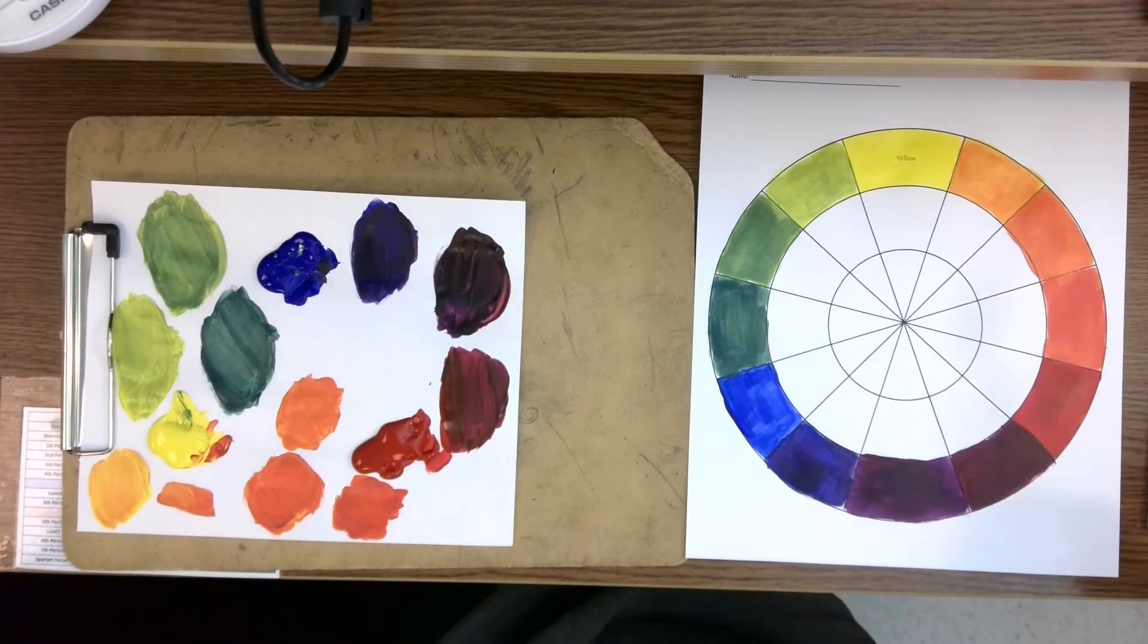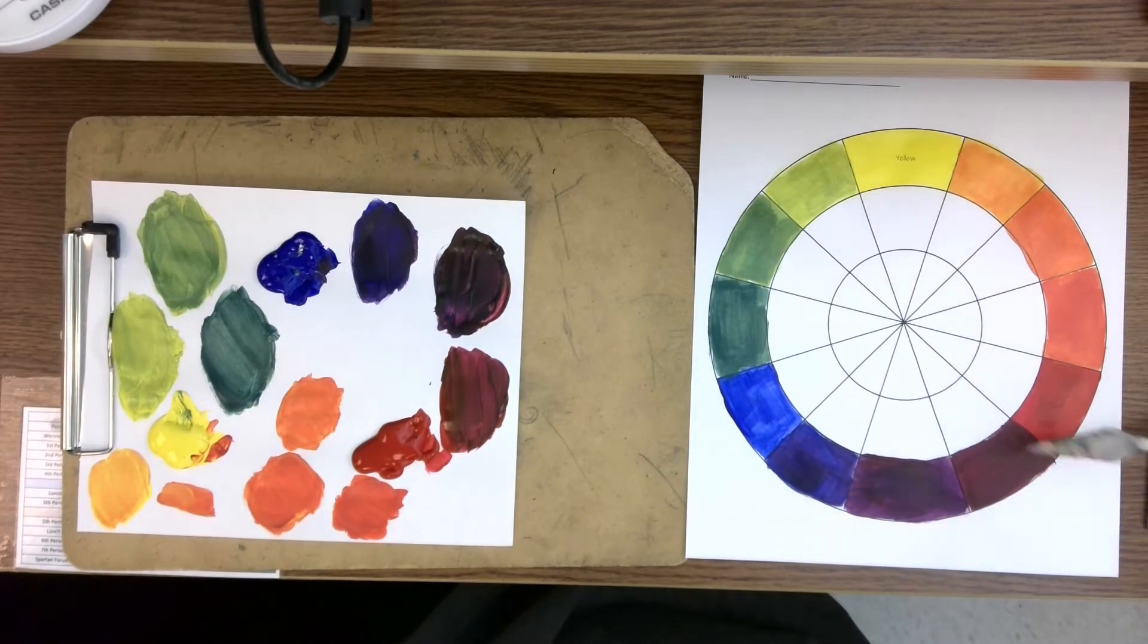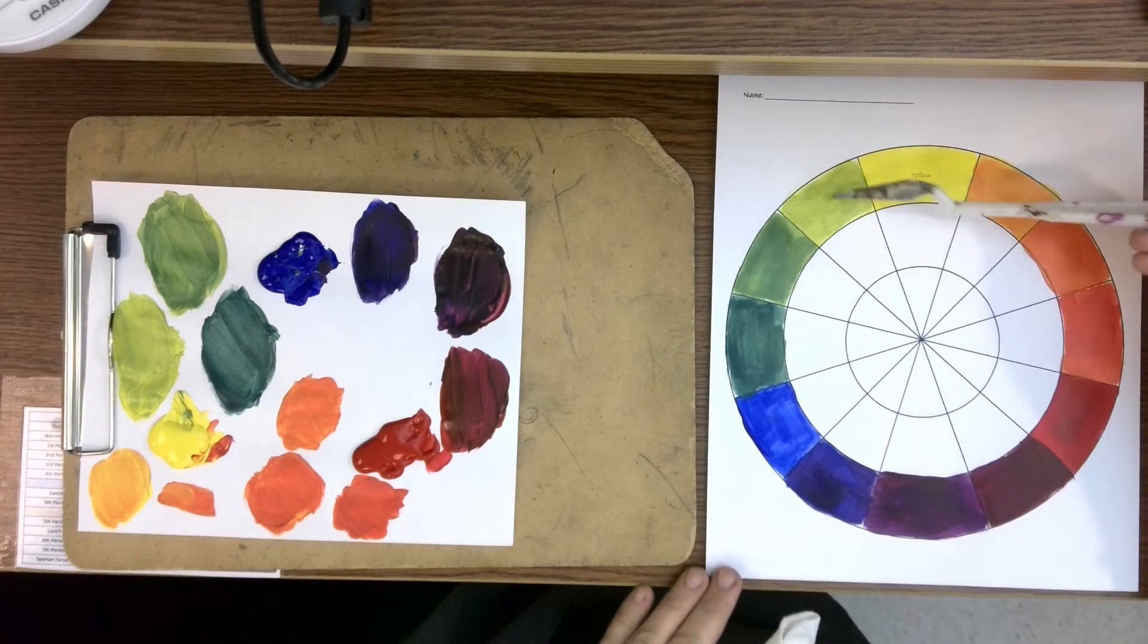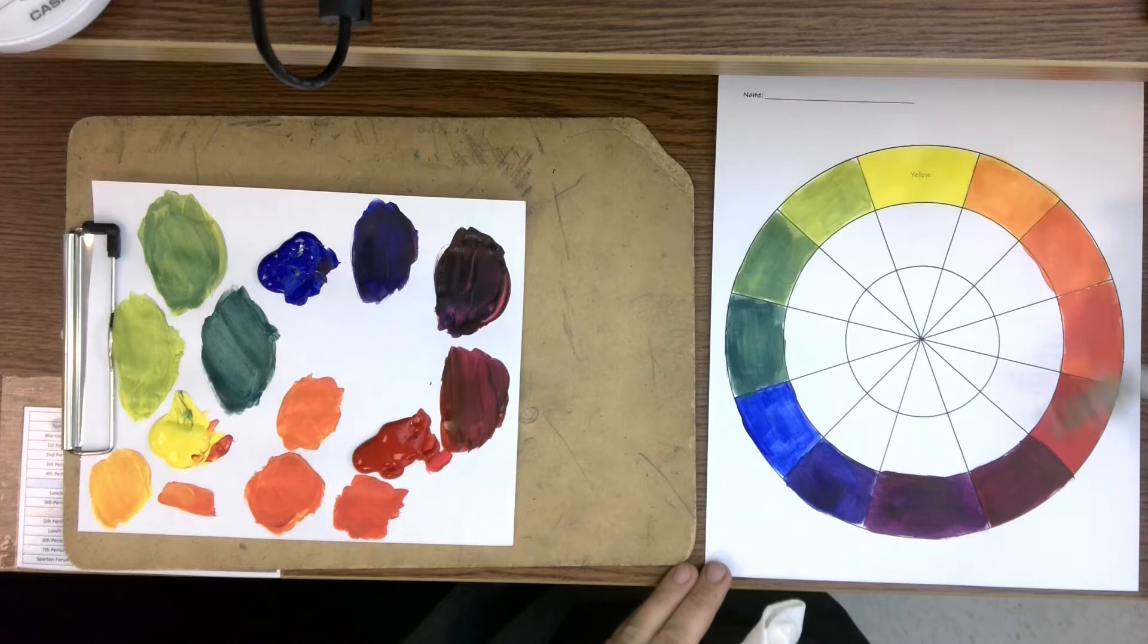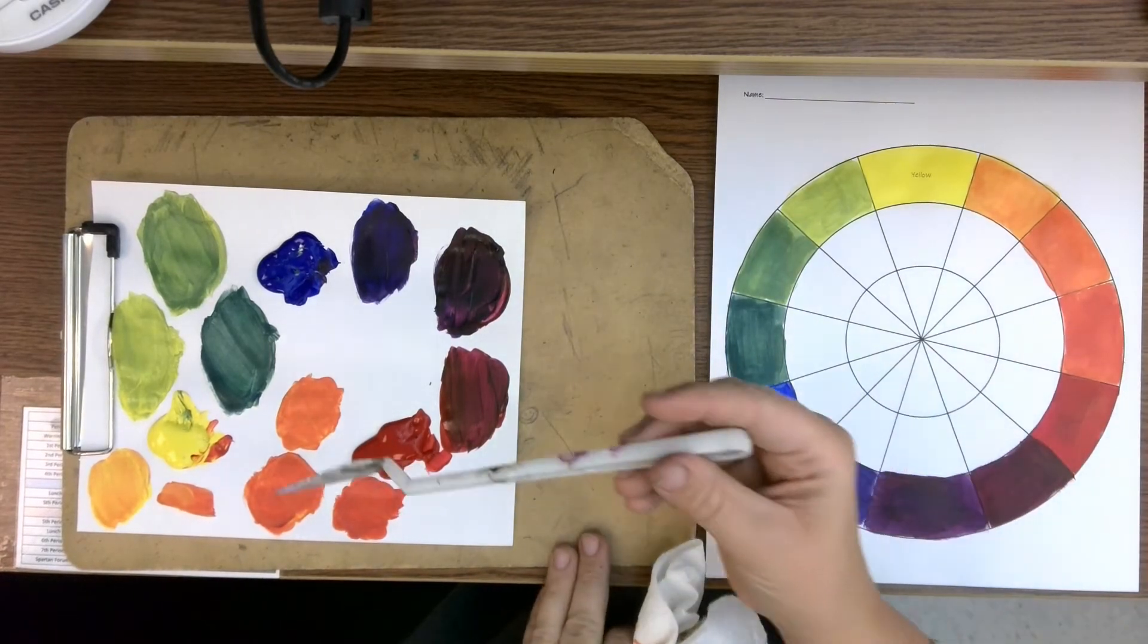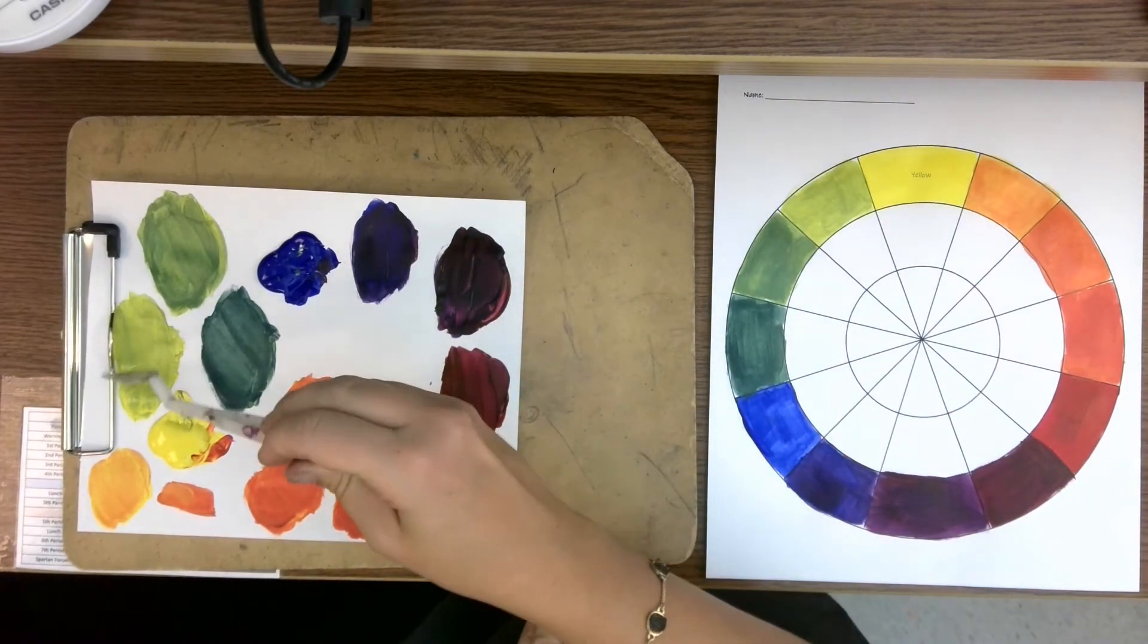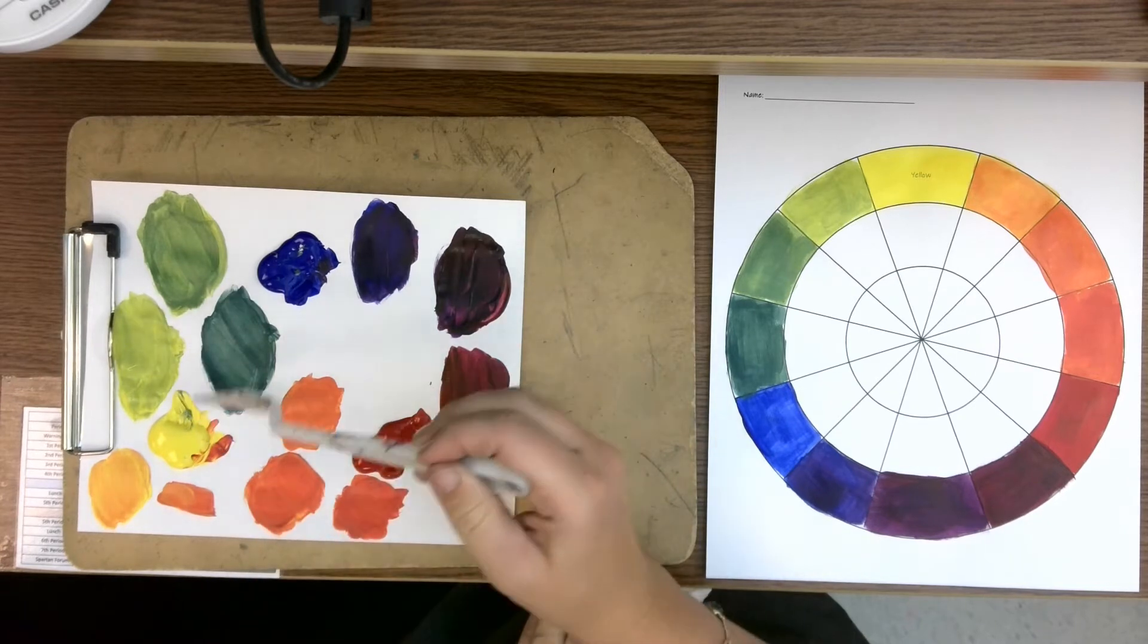They're going to form kind of some different types of browns in the middle. All right, in order to prepare for this, say I'm doing two of my colors that are not straight from the tube. I mix these colors, so I need to pre-mix a big pile of this and a big pile of that before I even get started.